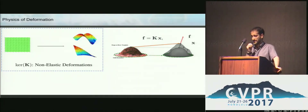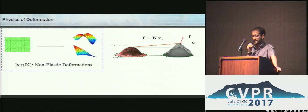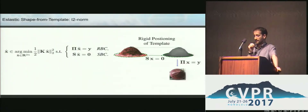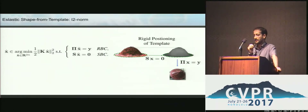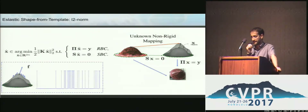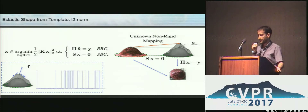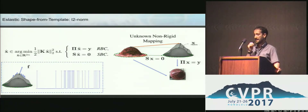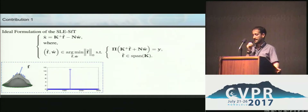If this matrix K has some kernel, this kernel will represent the set of rigid displacements. Prior alternate formulations minimize the norm of the force subject to projection and boundary constraints. In the presence of noise, the recovered force will not be sparse because of the noise affecting the L2,1 norm.